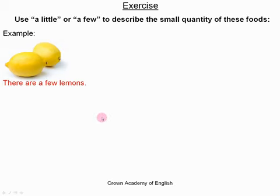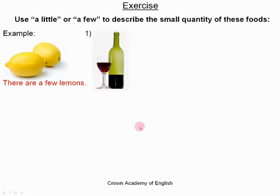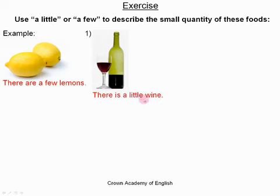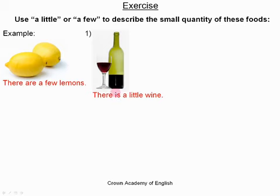Question one. The answer is 'there is a little wine,' because wine is a liquid and liquids are often uncountable. So wine stays in the singular, we use 'a little,' and the verb is in the singular.